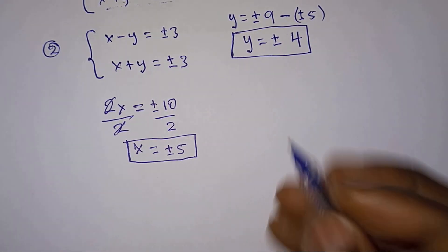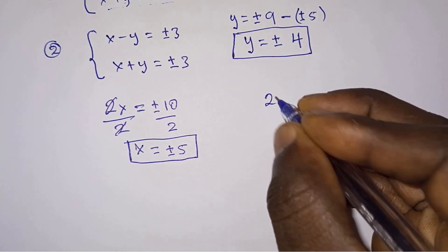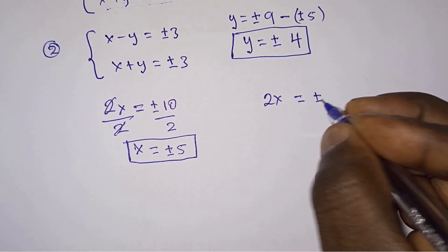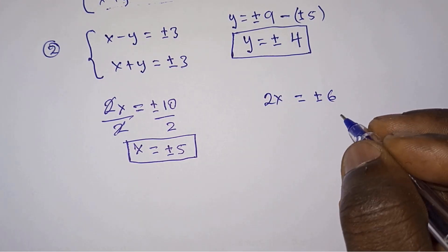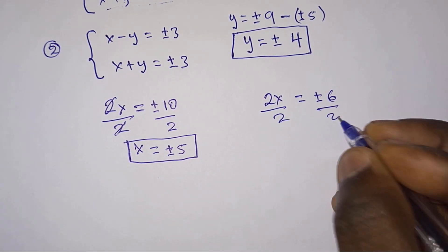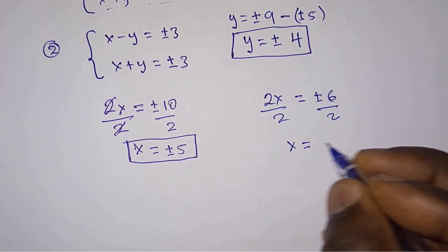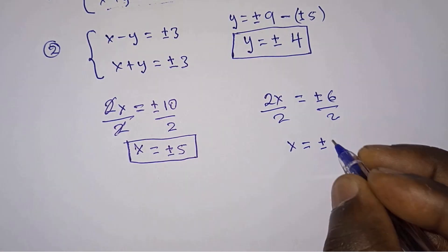If we add the two equations, we are getting 2x is equal to plus or minus 6. Then we will divide each side by 2, so we get x is equal to plus or minus 3.